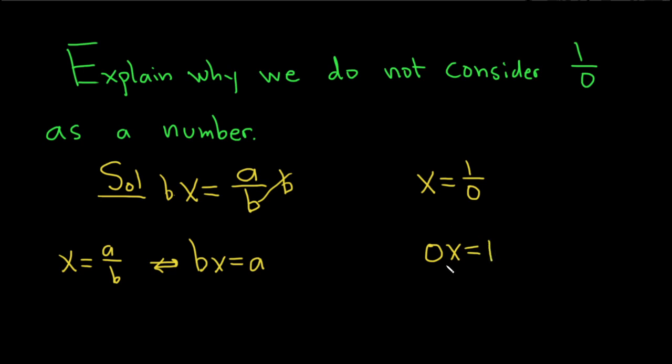But this doesn't make any sense, because 0 times x is equal to 0, and this is equal to 1, and so then 0 would be equal to 1. So it doesn't make any sense to try to define this number.